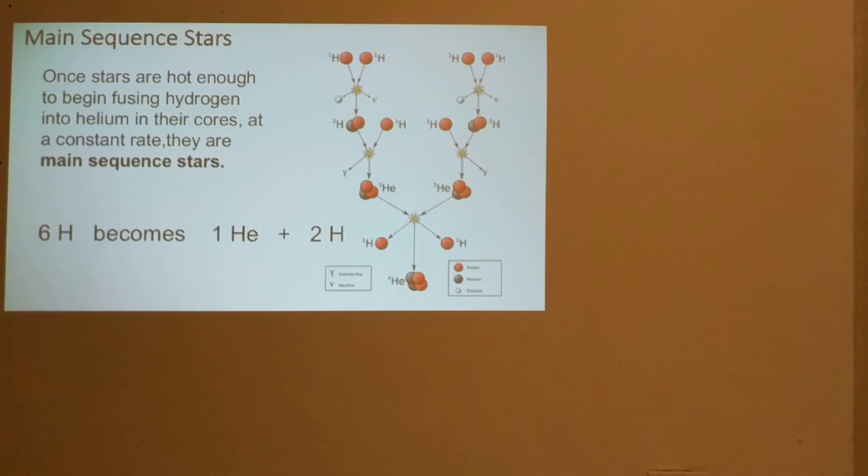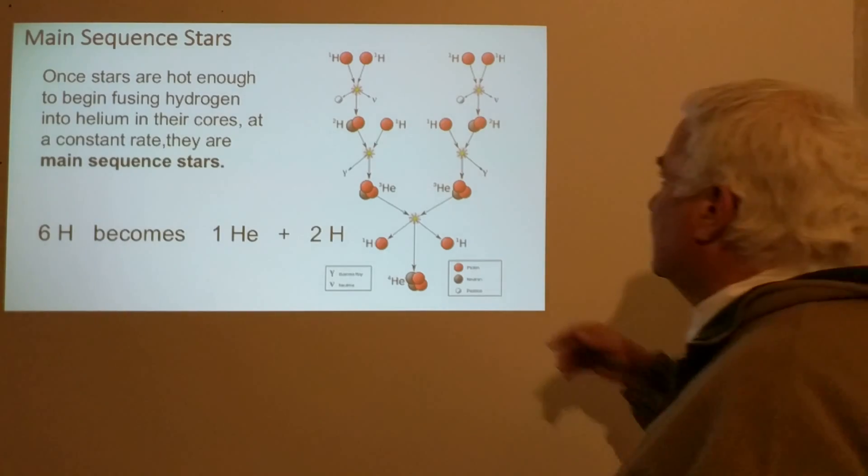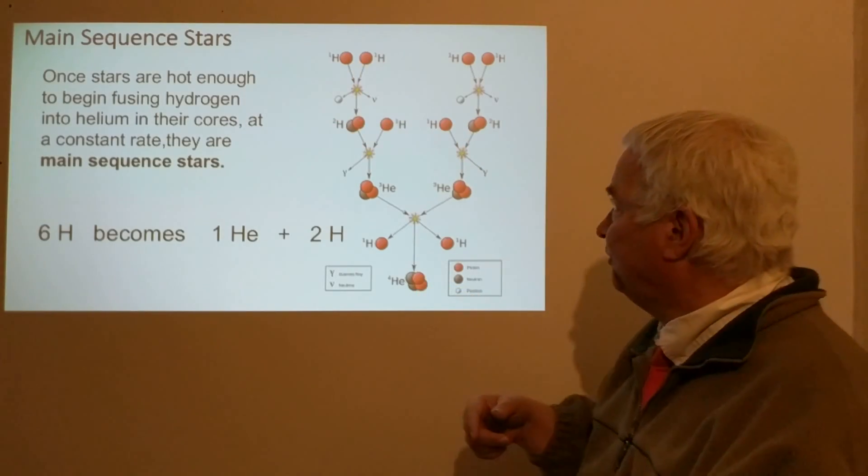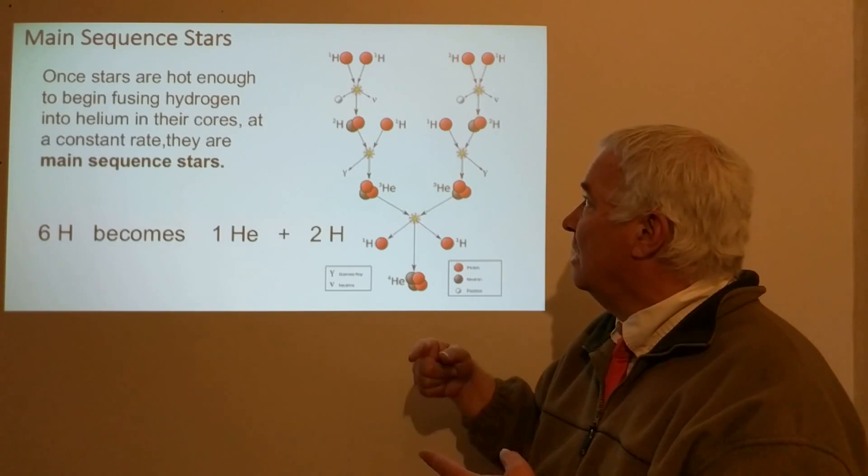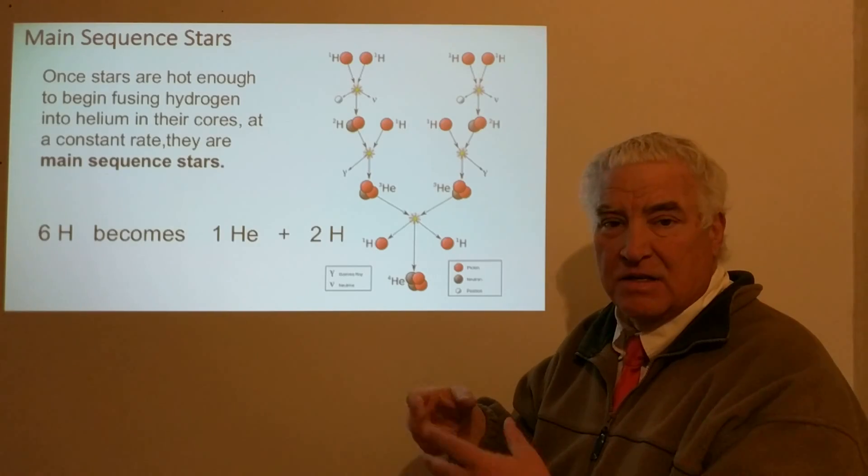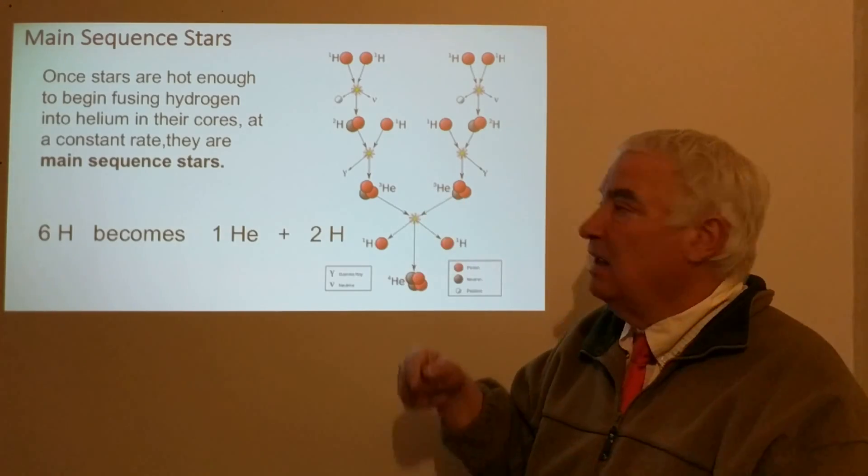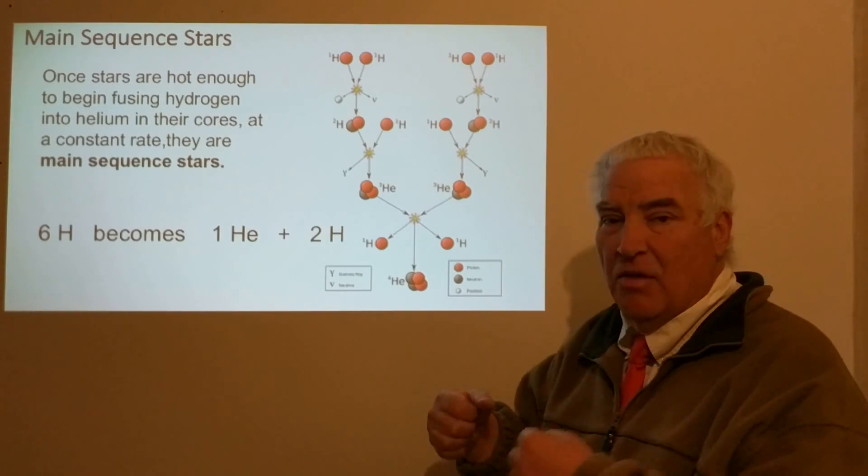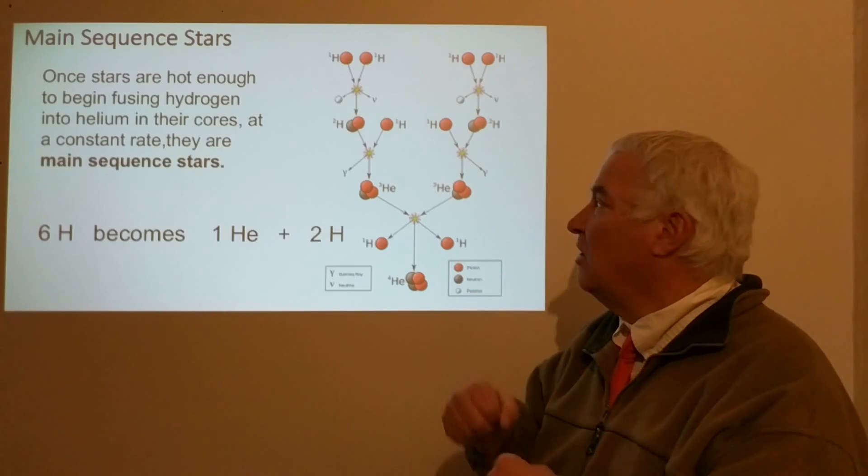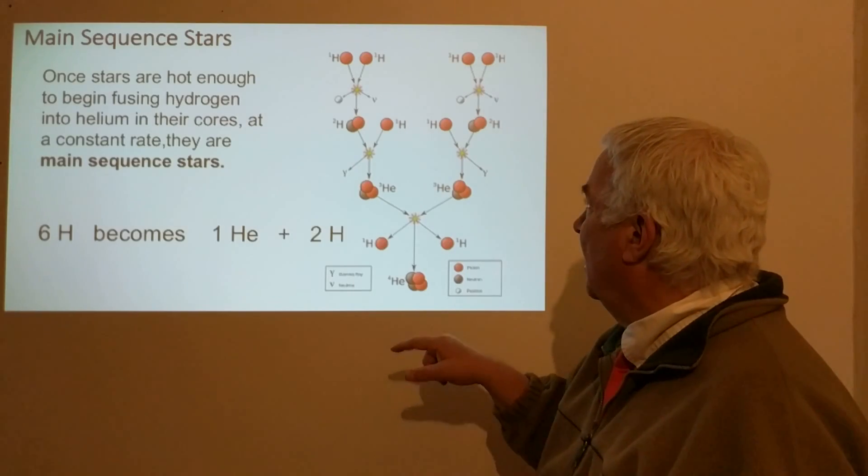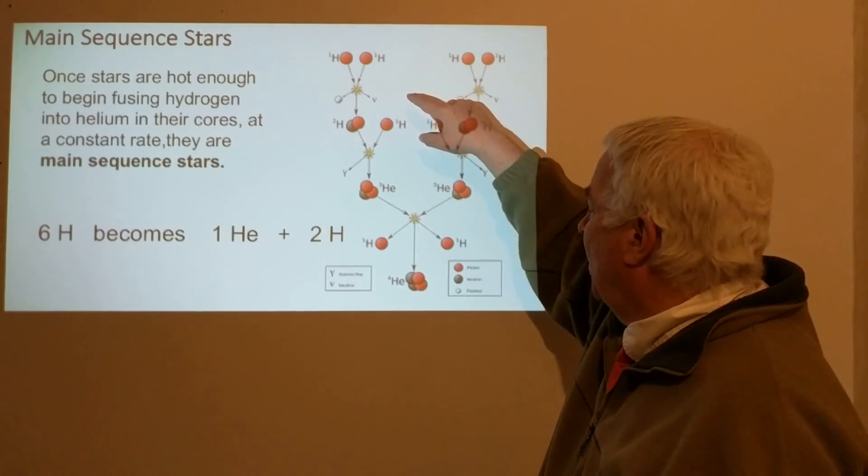We have the protons colliding into each other in the center of the Sun and all main sequence stars at high velocity and at high density and temperature. Very occasionally the protons will stick together rather than just bouncing off like a billiard ball.